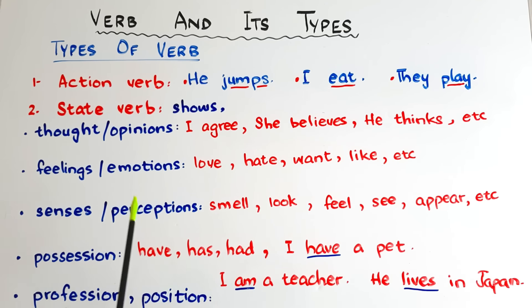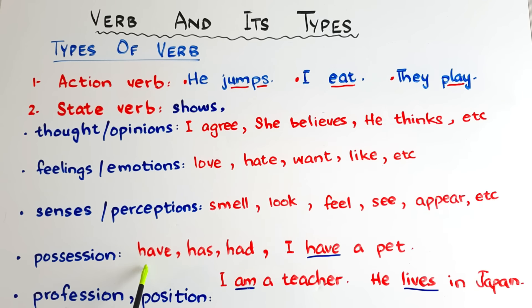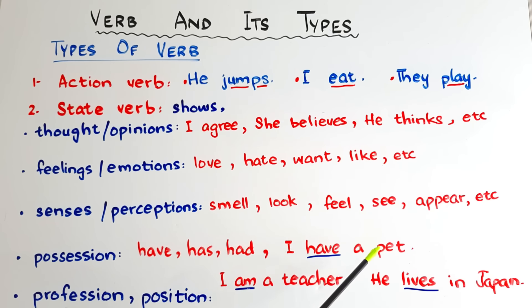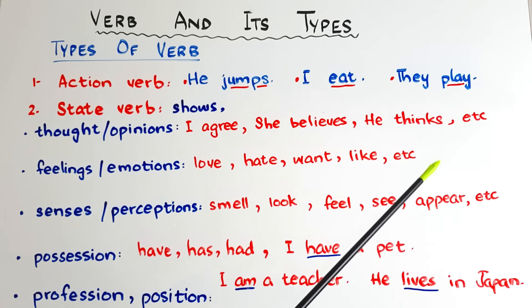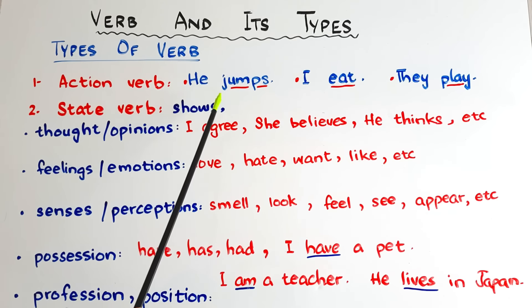Then we have possessions. To show possession, we cannot use an action verb; we need a state verb — that is 'have,' 'has,' or 'had.' For present tense, we use 'has' and 'have' according to the subject. With third person singular, use 'has,' and with all other subjects use 'have.' Like: 'I have a pet,' 'she has a pet,' 'he has a pet.'